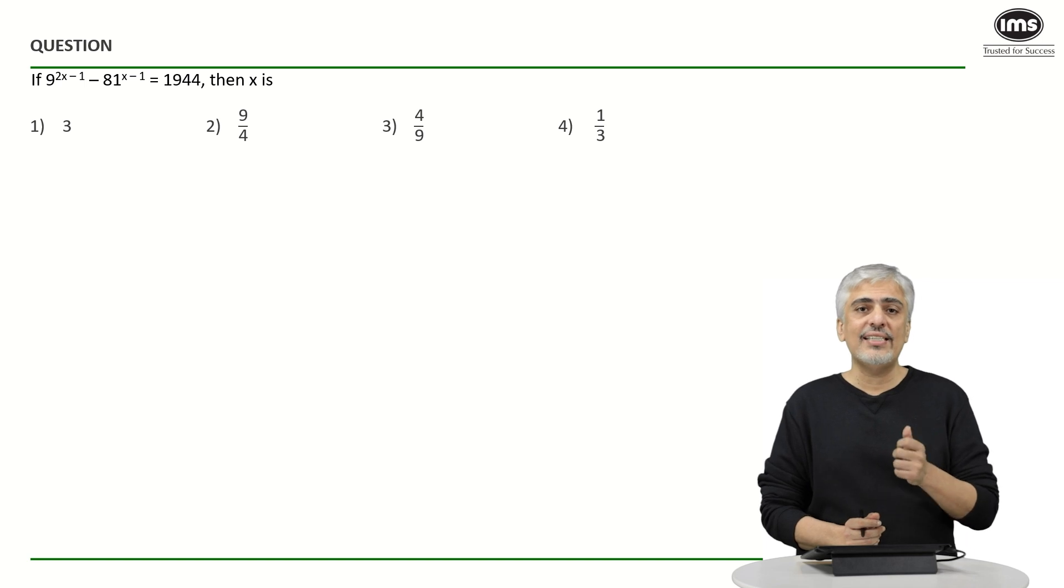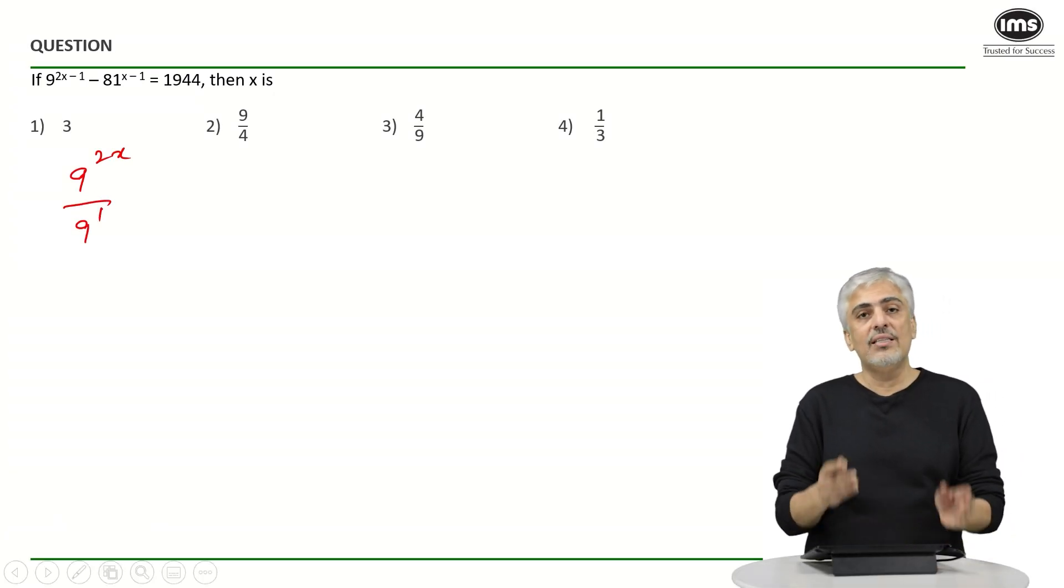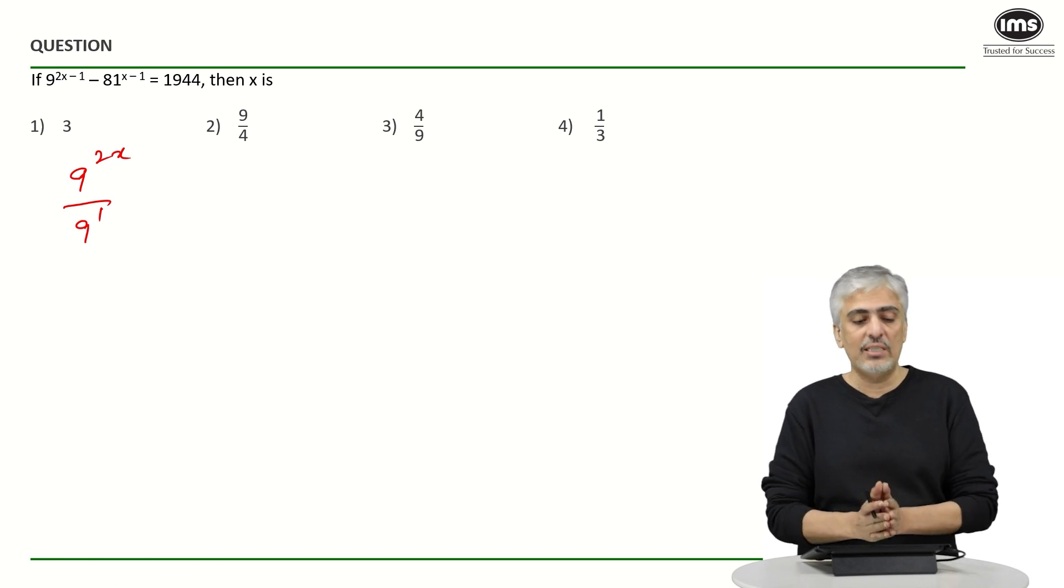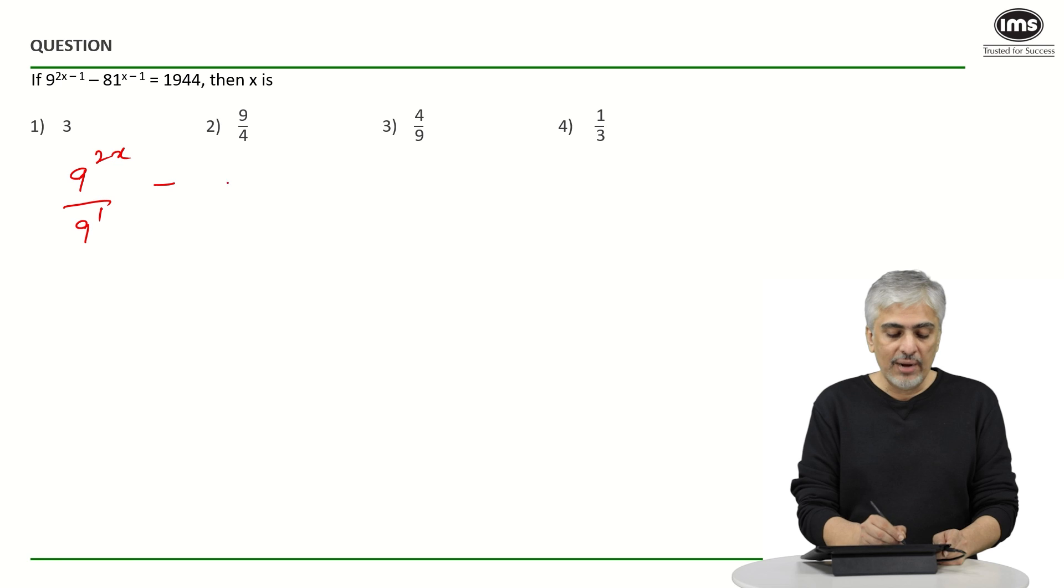The first thing which you need to understand in such questions with indices is I can write this as 9 raised to 2x divided by 9 raised to 1. The minus becomes division. If there is a plus it will become multiplication, otherwise it becomes division. So it is 9 raised to 2x divided by 9 raised to 1 minus 81 raised to x divided by 81 raised to 1 is 1944.